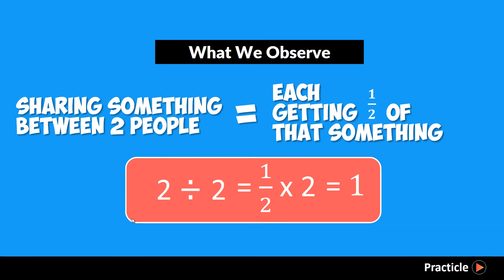Earlier on we said that this video is going to be about dividing with fractions, and believe it or not, we have just done our very first problem on that. Aren't those whole numbers? Well, do you remember that 2 is actually 2 divided by 1? So the 2 whole here can be expressed as an improper fraction. So 2 divided by 2 can actually be rewritten as 2 divided by 2 over 1. We just solved a division problem that involves a fraction.